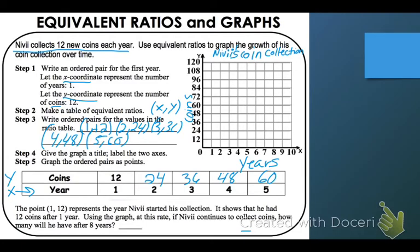Now it says graph the ordered pairs as points. So on step 5, it says graph the ordered pairs. So all you have to do is 1 year, 12. 1, 12.